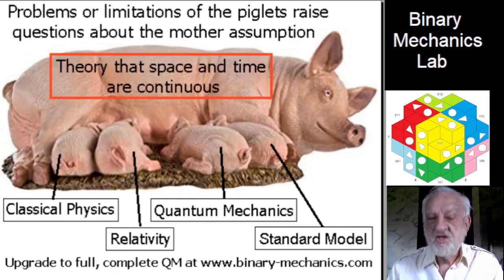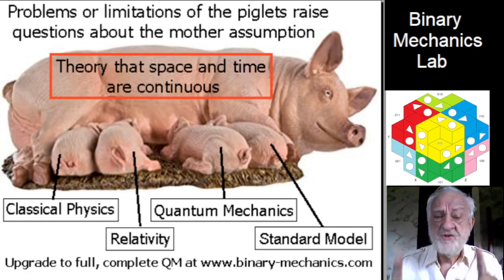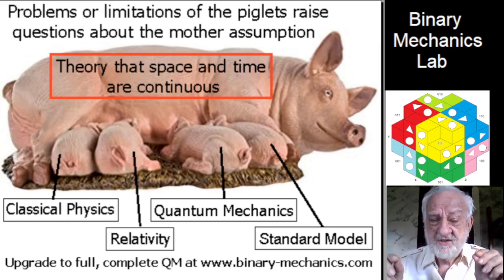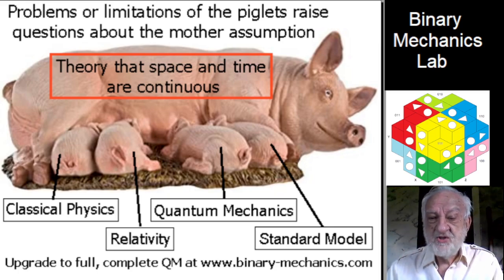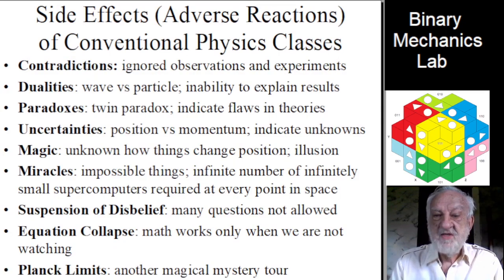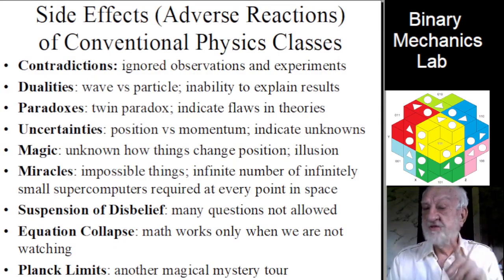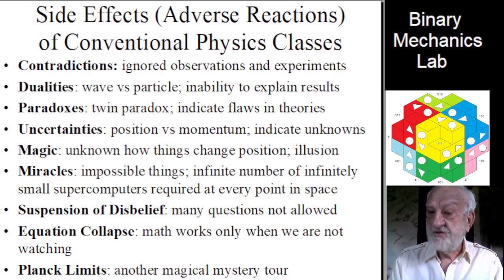Indeed, this theory is presented as fact in conventional physics textbooks. It is the mother assumption of its piglets and leads to their problems or limitations. Some of these limitations might be viewed as side effects or adverse reactions of the conventional physics assumption of continuous space and time.